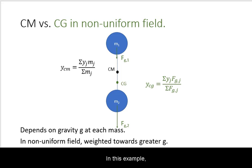In this example, we have two equal masses, and the center of mass is at the midpoint between them. However, because the value of g is greater for mass 2, the center of gravity is closer to it.